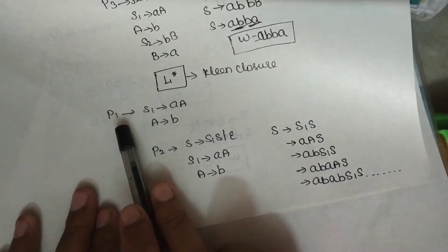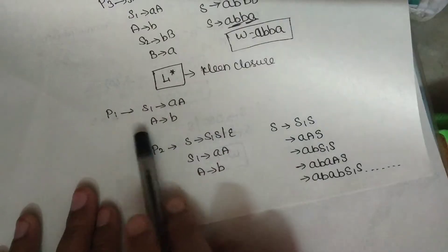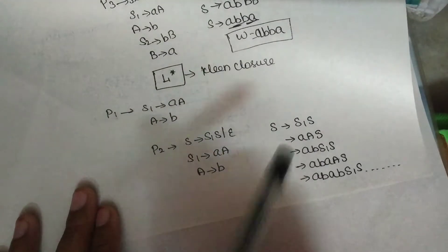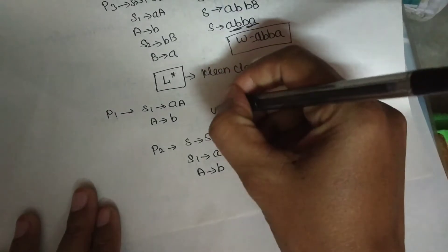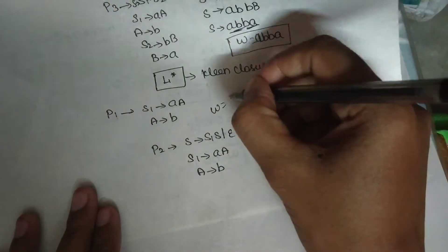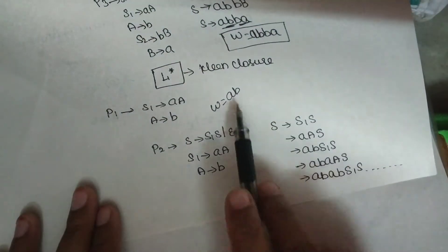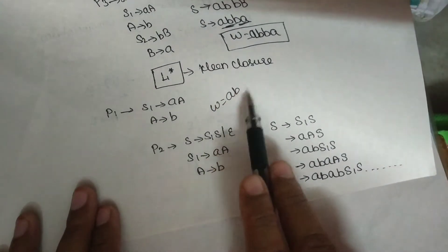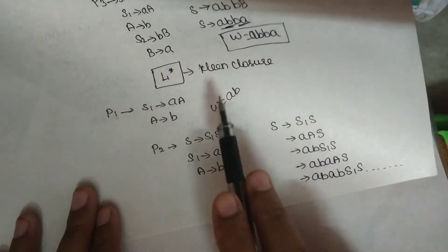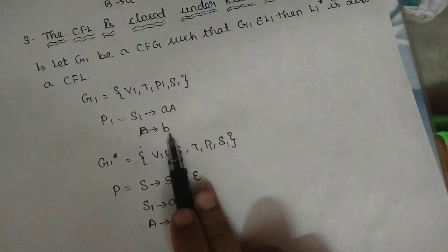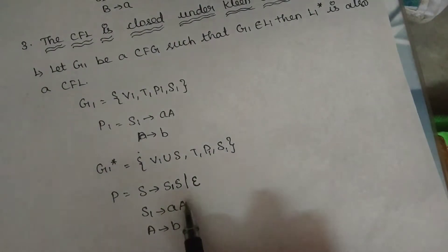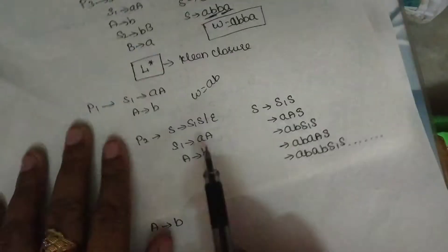If you use different languages, you can use productions S1 to A and add a grammar to get S1 to B. I have a Kleene closure implementation — this is the production rule.